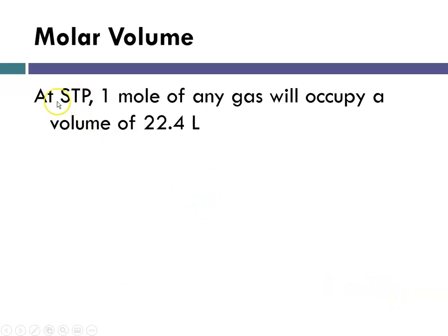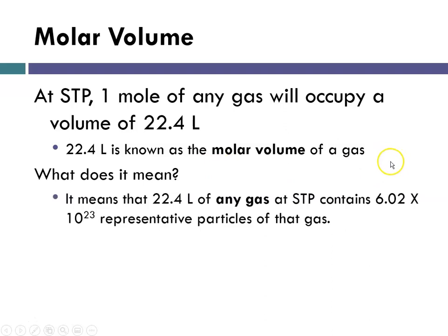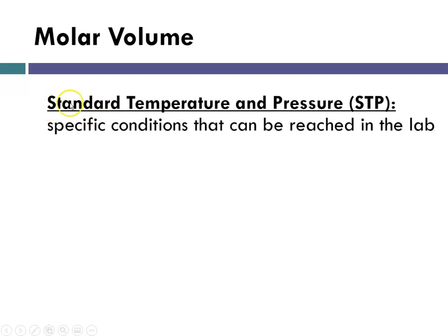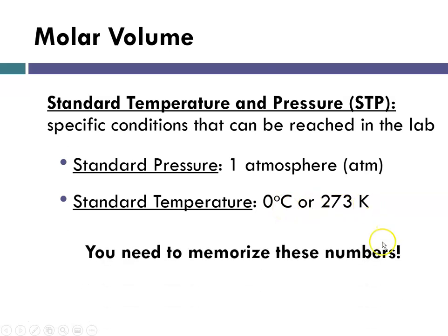So we refer to these as standard conditions of temperature and pressure, and we abbreviate them as STP, standard temperature and pressure. So at STP, one mole of any gas has a volume of 22.4 liters. 22.4 liters is known as the molar volume of a gas. What does that mean? It means that 22.4 liters of any gas at standard temperature and pressure contains 6.02 times 10 to the 23rd particles of that gas, and that means that that's one mole of a gas. So if I give you 22.4 liters of a gas, I'm giving you a mole of the gas. So what are these STP conditions? Standard temperature and pressure are agreed to be the specific conditions that you can reach in lab where standard pressure is 1 atmosphere, the abbreviation is ATM, and standard temperature is 0 degrees C, which is the same as 273 Kelvin. You need to memorize these numbers.